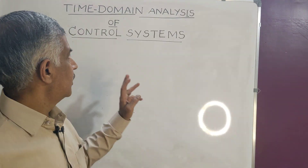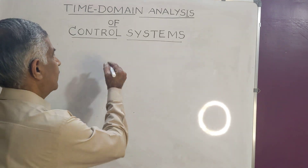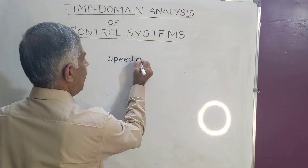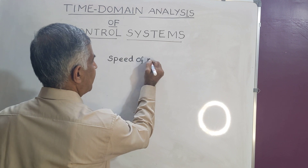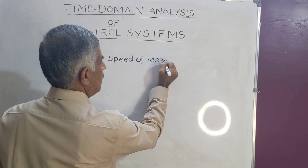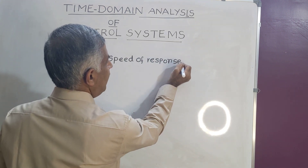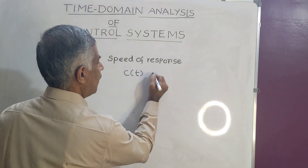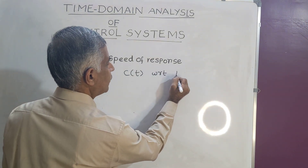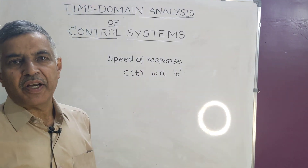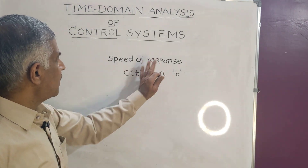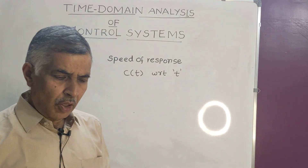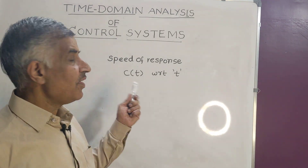That is speed of response — the variation of output with respect to time. Time is the independent variable, so we look at the variation of c(t) with respect to t.